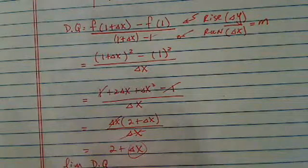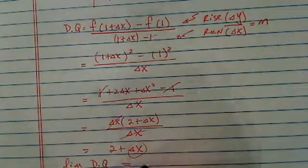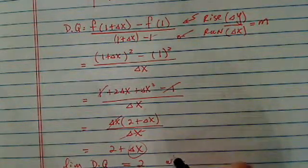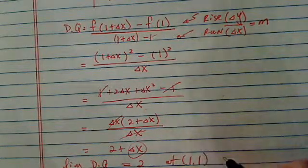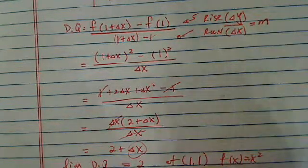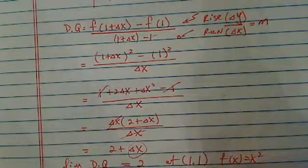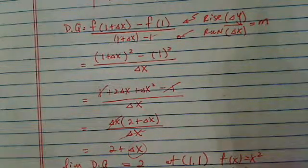When I take a limit of this difference quotient, as delta x approaching a tiny little number, I'll see at the point (1,1), the function f(x) equal to x squared has slope of 2.